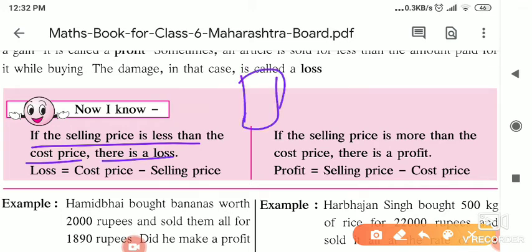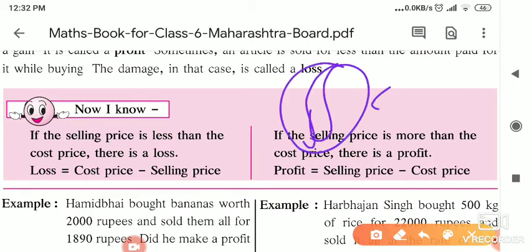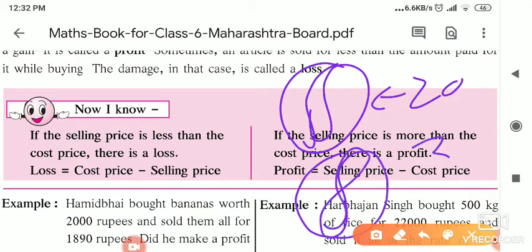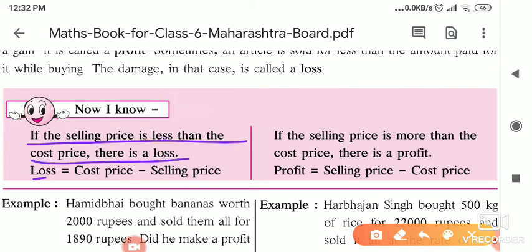Suppose a ball has a cost price of 20 rupees. If the shopkeeper sells it for 30 rupees, he is facing a profit. If he sells it for 15 rupees due to some reason, he is facing a loss. So from this, we understand: if selling price is less than cost price, there is a loss.